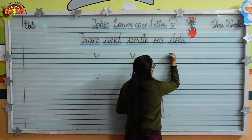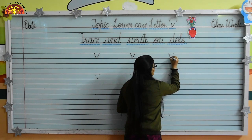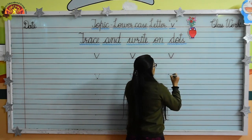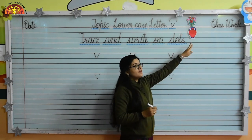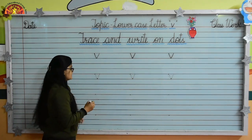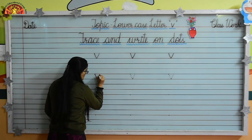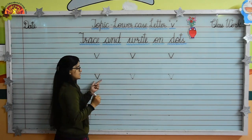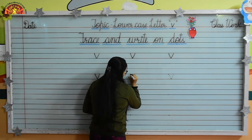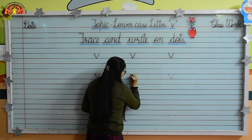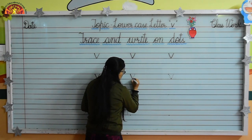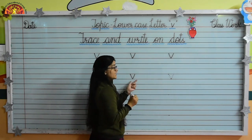Do it again. Put your pencil here, draw a slanting line, one more slanting line like this — lowercase letter V. Do it very beautifully kids. Put your pencil here, draw a slanting line, one more slanting line like this — lowercase letter V. Write it again: draw a slanting line, and from this point one more slanting line like this. Lowercase letter V.